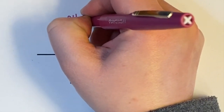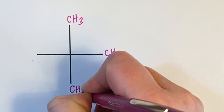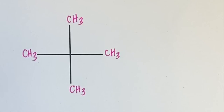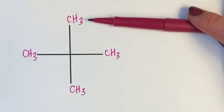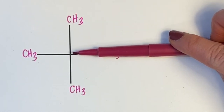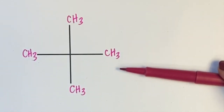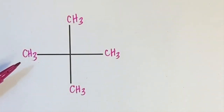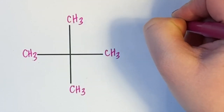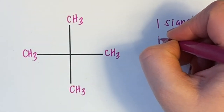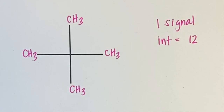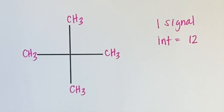Looking at a molecule with 4 methyl groups bonded to a central carbon, there are 3 hydrogens on each methyl group — a total of 12 hydrogens. In every case, each hydrogen is bonded to a carbon that is bonded to a carbon with 3 other methyl groups, so all hydrogens are in an identical environment. We expect 1 signal in the NMR accounting for all 12 protons. Because there is only one signal, no integration ratio will typically be provided since there are no other peaks to compare it to.